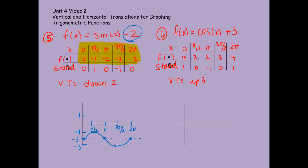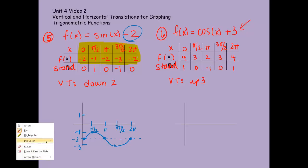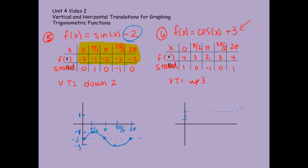I'm going to draw the new midline at positive 3. I still have an amplitude of 1, so it goes from 2 to 4 — that's the range. My x-axis is still marked the same: pi over 2, pi, 3 pi over 2, and 2 pi. My graph now goes 4, 3, 2, 3, 4. And there is my vertical translation on my cosine graph.